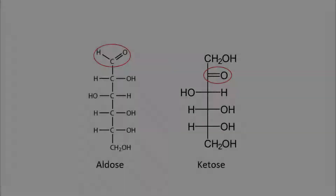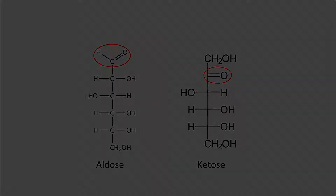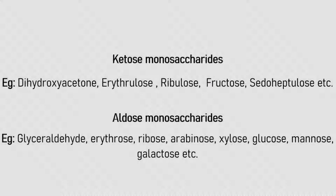Just to recall, an aldose is a sugar — usually a monosaccharide — that has an aldehyde group at one of the terminal carbons. A ketose is a sugar with one ketone group per sugar molecule. Common examples of ketose sugars include dihydroxyacetone, erythrulose, ribulose, fructose, and sedoheptulose.